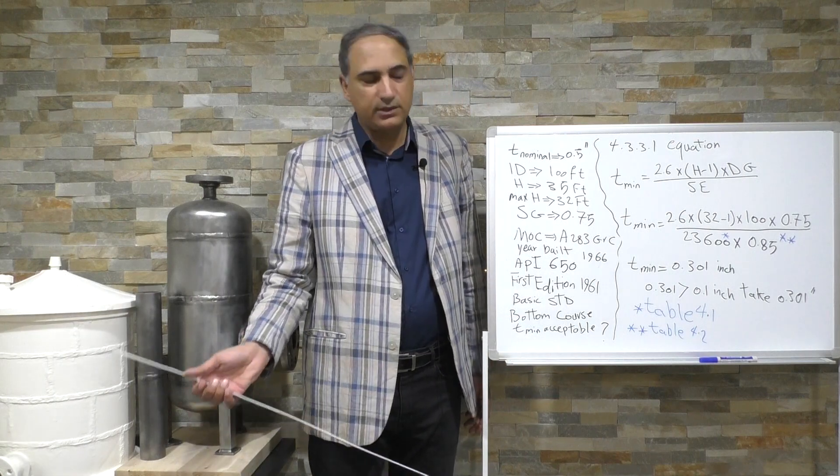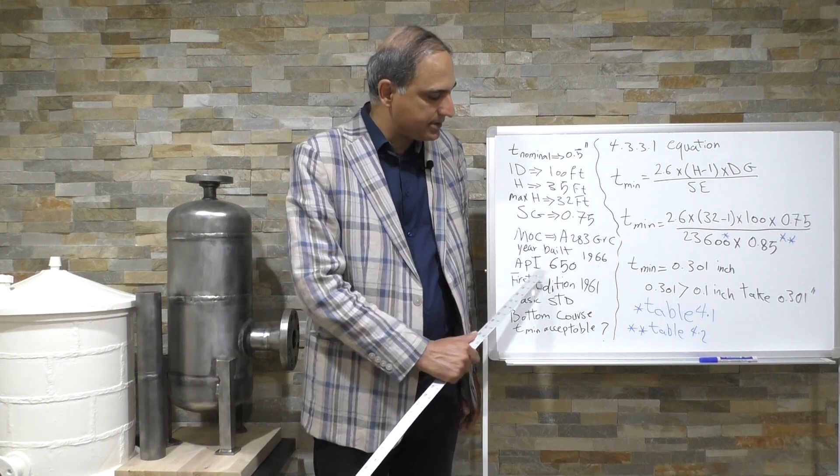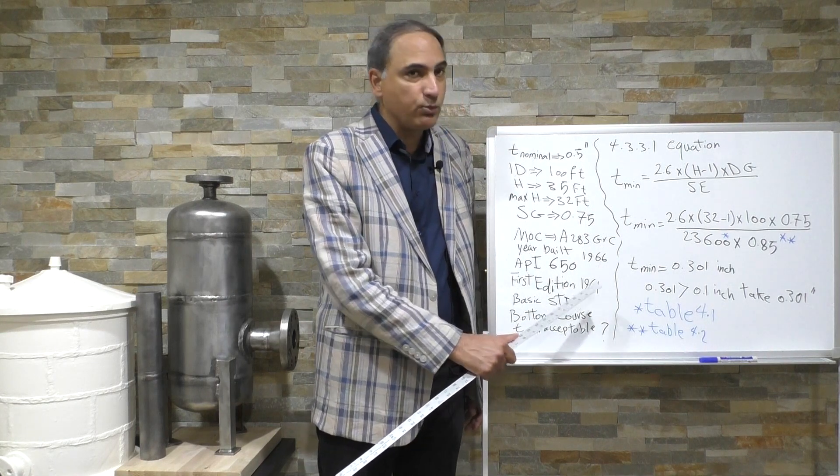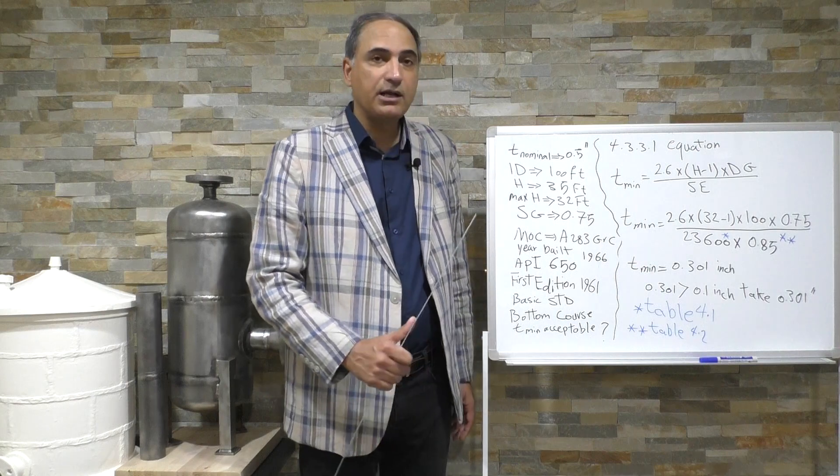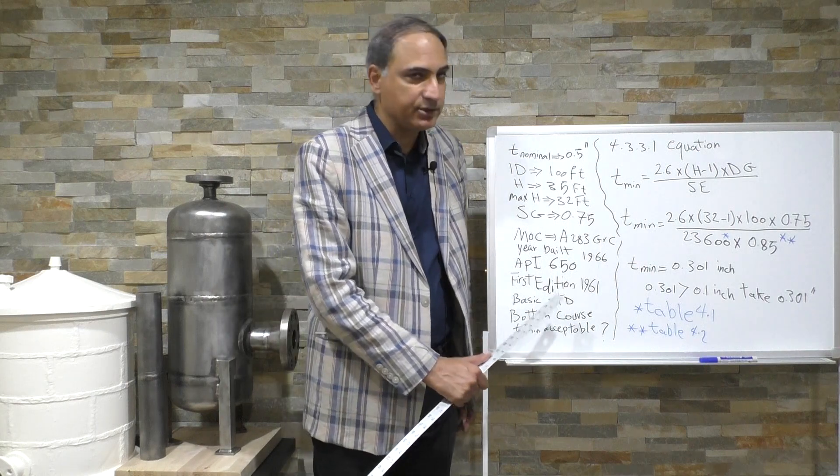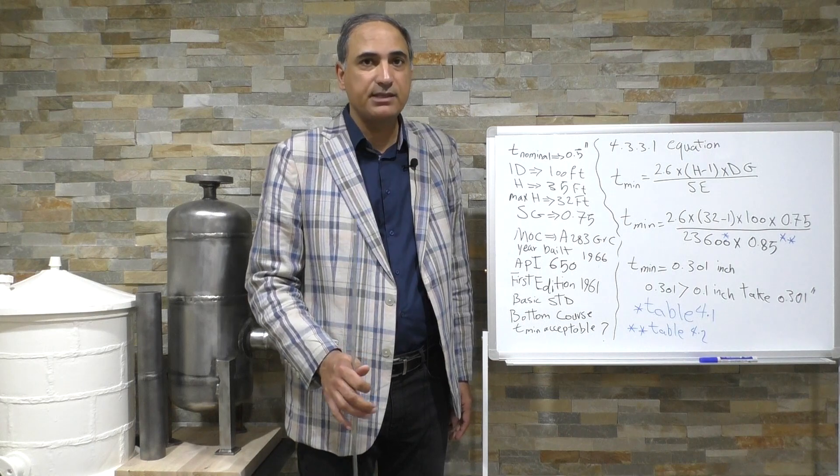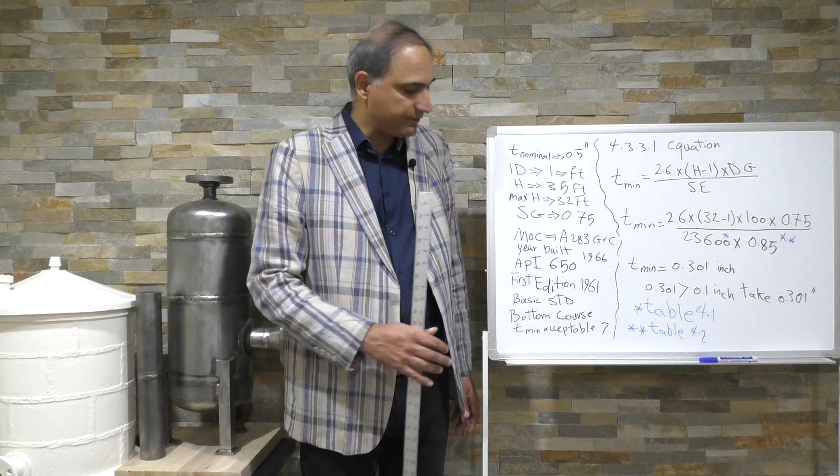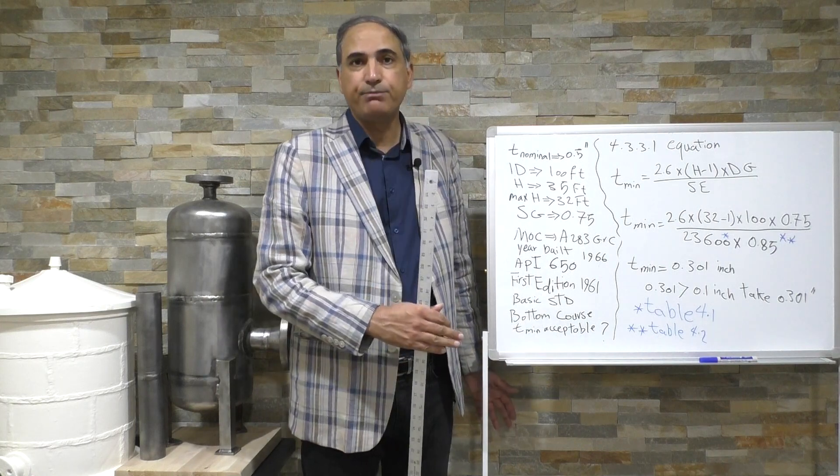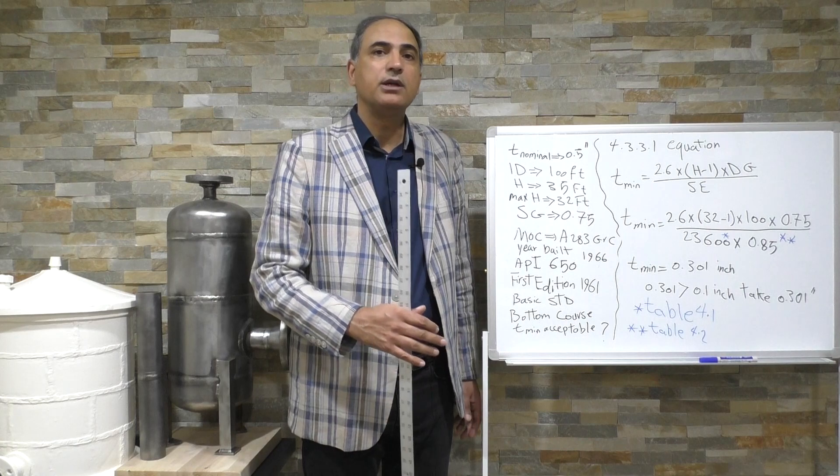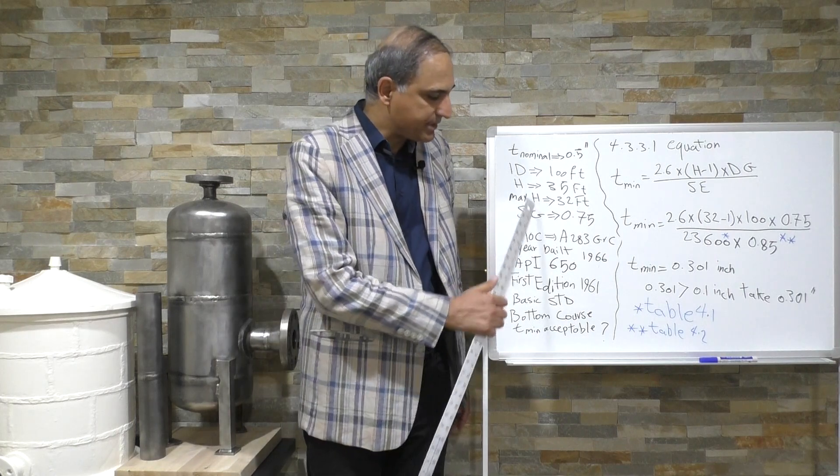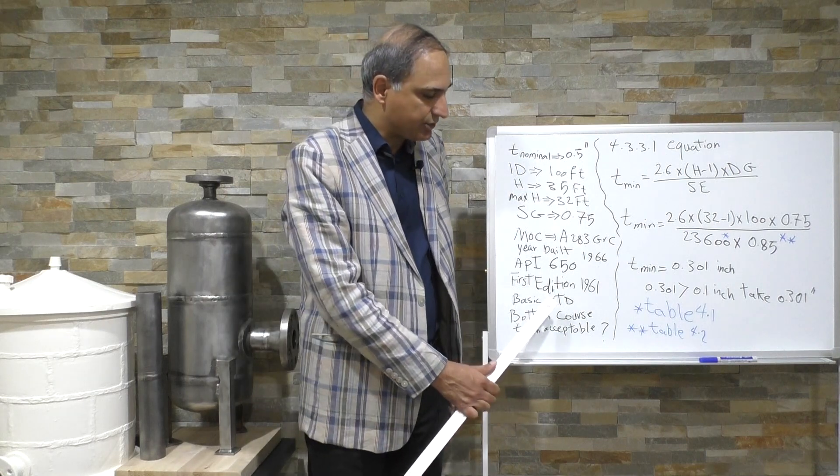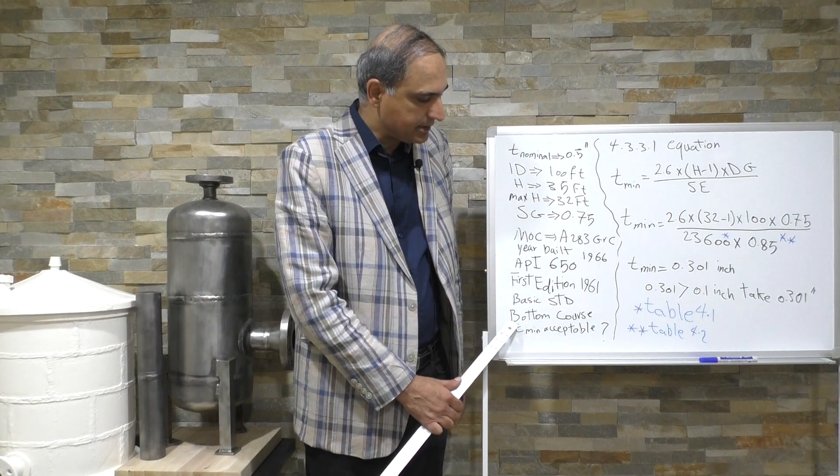What was the design code? The design code was API 650 based on the first edition of the 1961 code and it's designed based on the basic standard. So any storage tank designed based on API 650 either is going to be designed based on the basic standard which is the main part of the code or it's based on the annexes. So the problem says to us that this design based on the basic standard and then it's asking us to calculate bottom course minimum acceptable thickness.